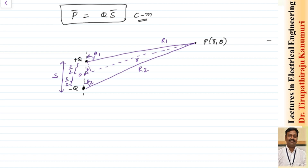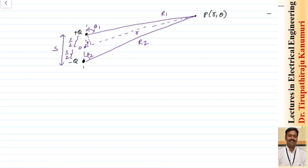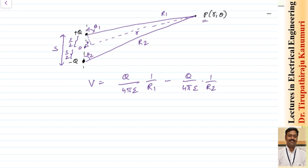Now if you want to calculate the potential at point P, potential at this point P can be calculated as Q divided by 4 pi epsilon multiplied by 1 by R1. This is due to the positive charge, and due to the second charge, that is the negative charge, I can write as minus Q divided by 4 pi epsilon into 1 divided by R2. So I can write this as Q by 4 pi epsilon into (1 by R1 minus 1 by R2). Let us take it as equation number 1.